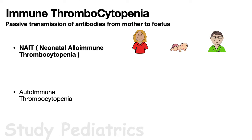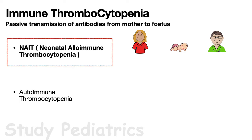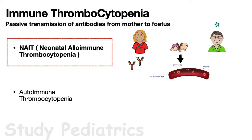Immune thrombocytopenia is antibody-mediated decreased platelet count involving passive transmission of antibodies from mother to fetus. It is of two types: alloimmune and autoimmune. In alloimmune — also called NAIT, neonatal alloimmune thrombocytopenia — the mother produces antibodies against a specific human platelet antigen (HPA) absent in the mother but present in the fetus, inherited from the father. In response, the mother produces anti-HPA antibodies which cross the placenta and enter fetal circulation.